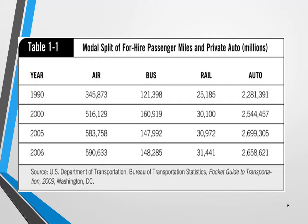Among the public transit modes — those not owned by individuals — air transportation has the biggest share. One justification is that air transportation mileage is much bigger. Passenger-miles equals number of passengers multiplied by number of miles traveled, so it is intuitive that air passengers are moved for longer distances, making that amount bigger than bus and rail. In the US compared to many other countries, the share for rail is much less than even bus and air.